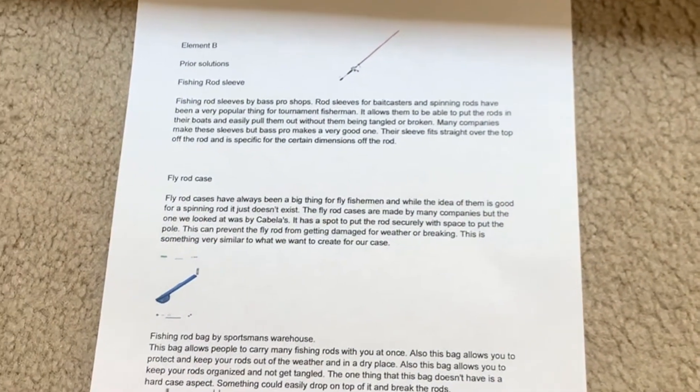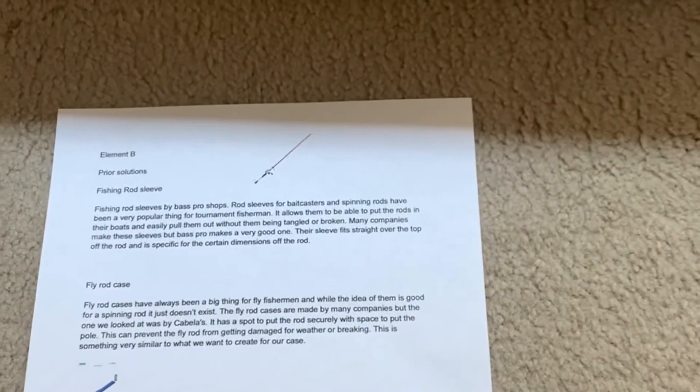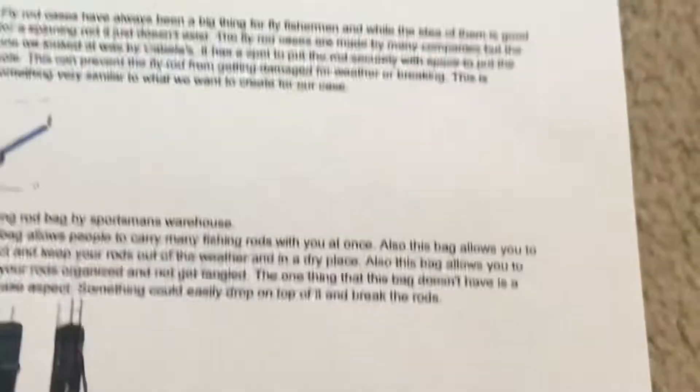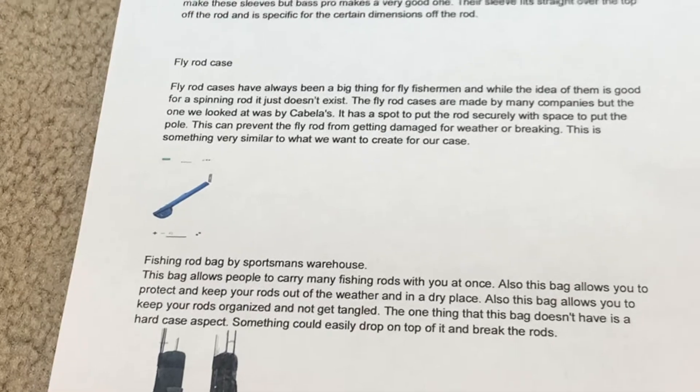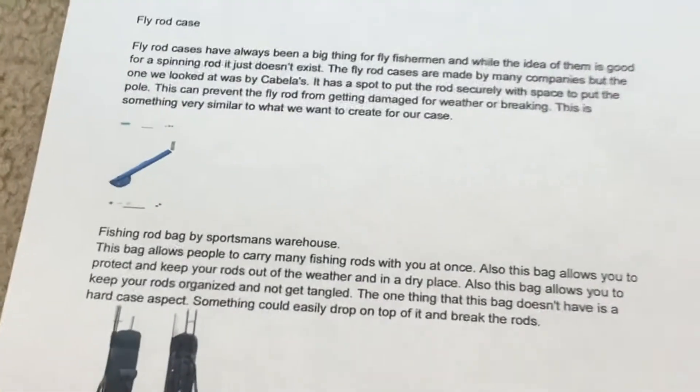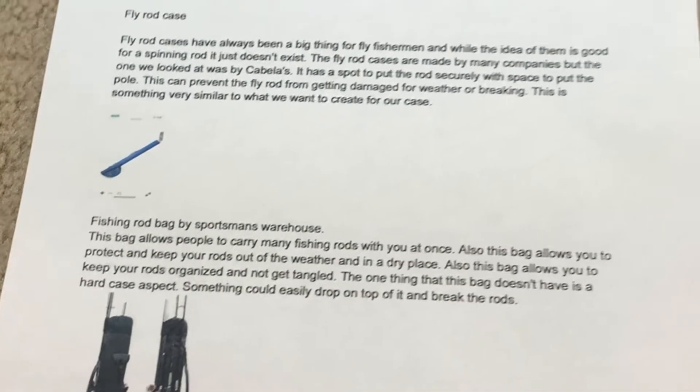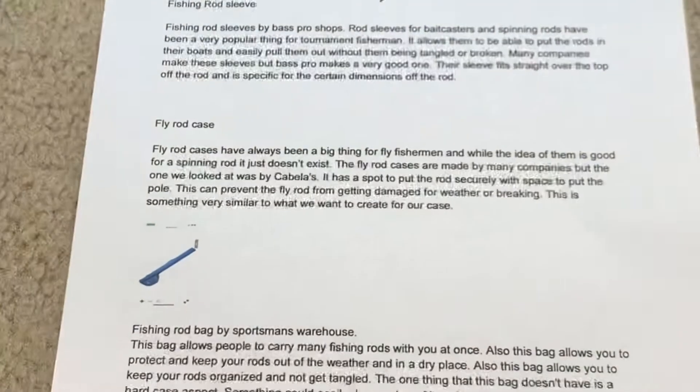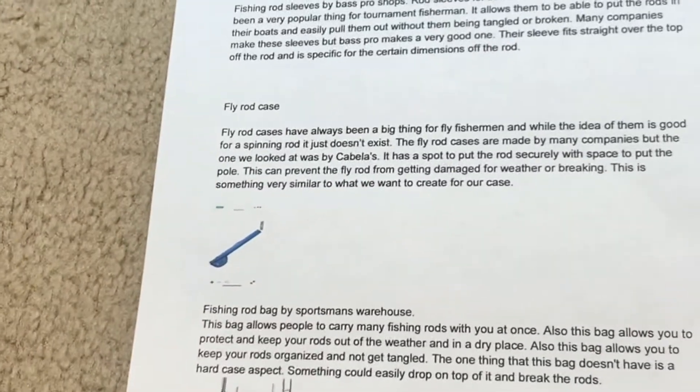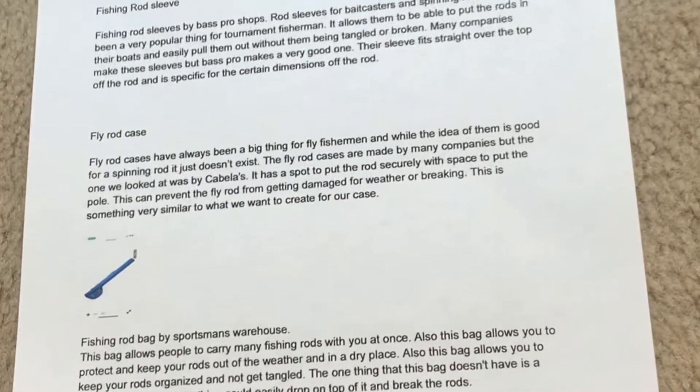So some of the previous solutions that were made before our fishing rod case are first a fishing rod sleeve, which is right there. For a fishing rod sleeve, those are mainly for like bait casters and there are ones for spinning rods as well, but they're not as protective because it's just a sleeve. And then next up is a fly rod case, which just like the name, that's basically just for fly rods and you can't do that for a spinning rod or for a bait caster.